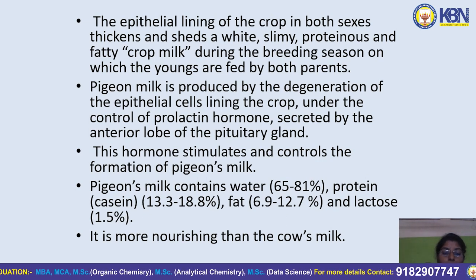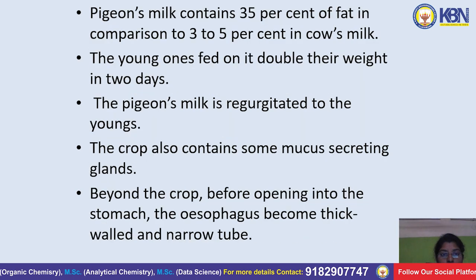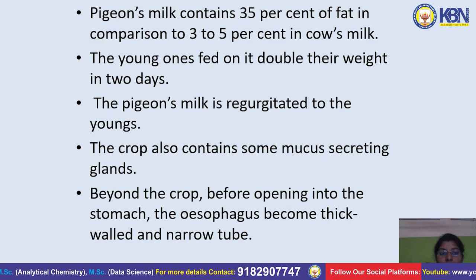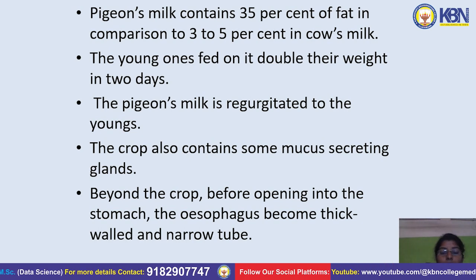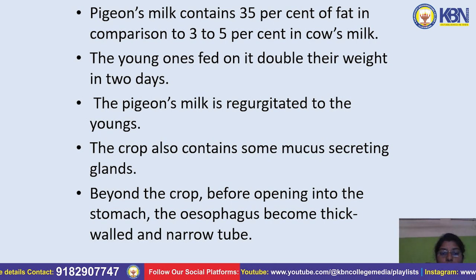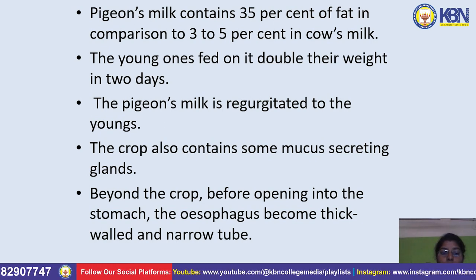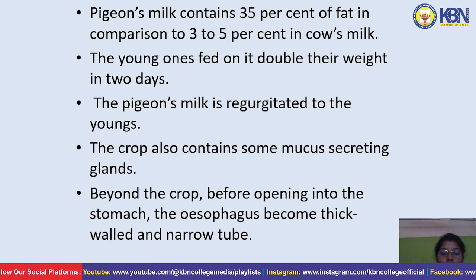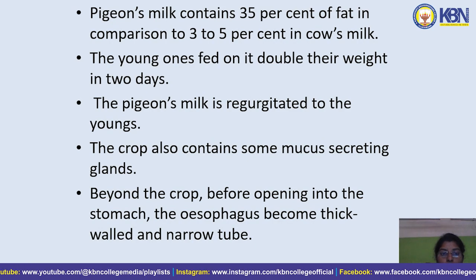Pigeon's milk is more nourishing than cow's milk. Pigeon's milk contains 35% fat compared to 3–5% in cow's milk. The young ones fed on it double their weight in two days. The pigeon's milk is regurgitated to the young. The crop also contains some mucus-secreting glands. Beyond the crop, before opening into the stomach, the esophagus becomes a thick-walled, narrow tube.